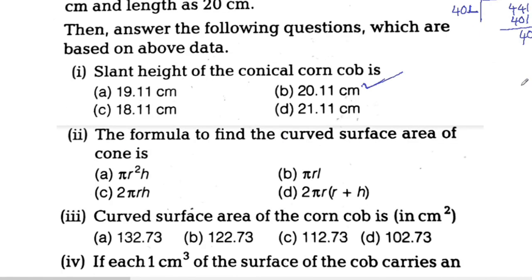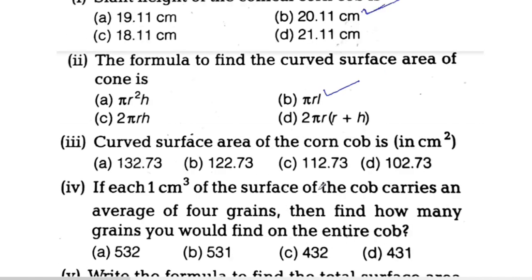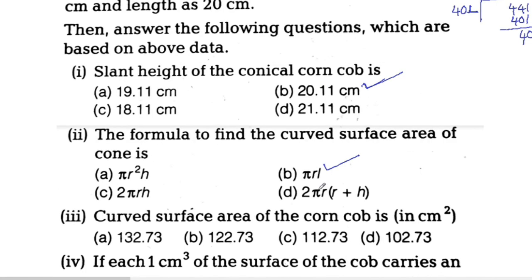Next question: find the curved surface area of the corncob. The formula for curved surface area of a cone is CSA equals pi times R times L. Now we substitute: pi is 22/7, radius R is 2.1 cm, and slant height L is 20.11 cm.